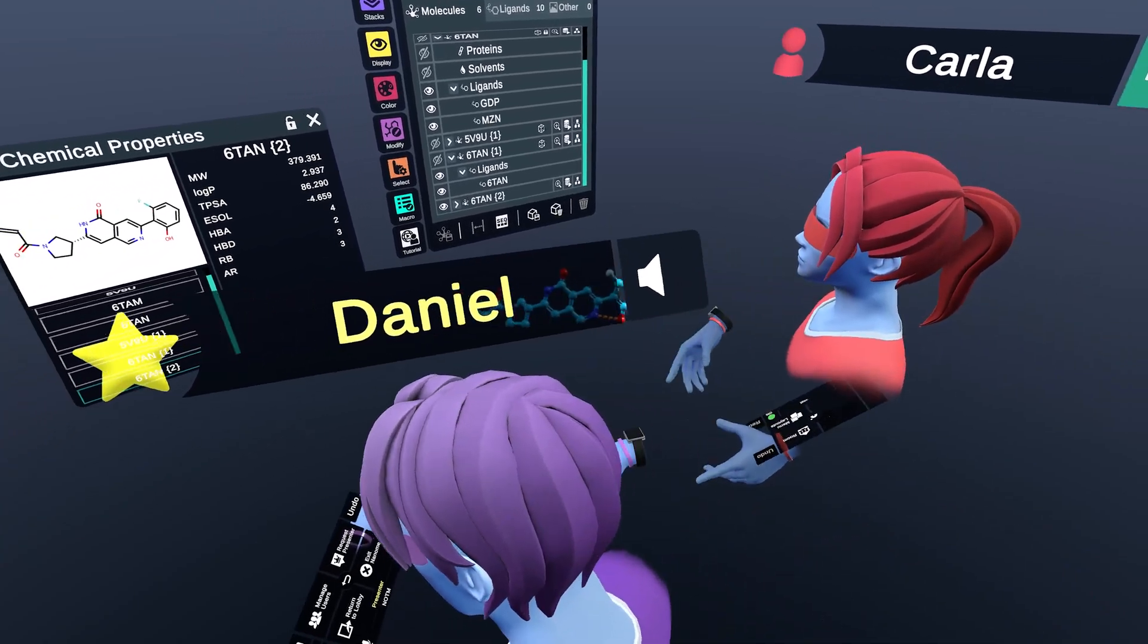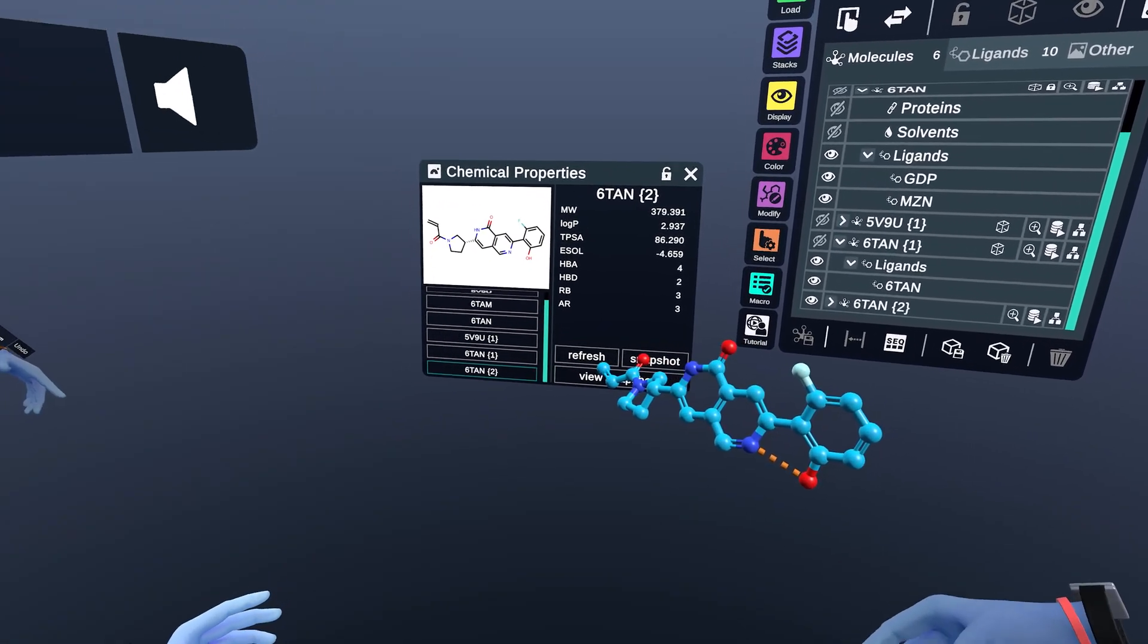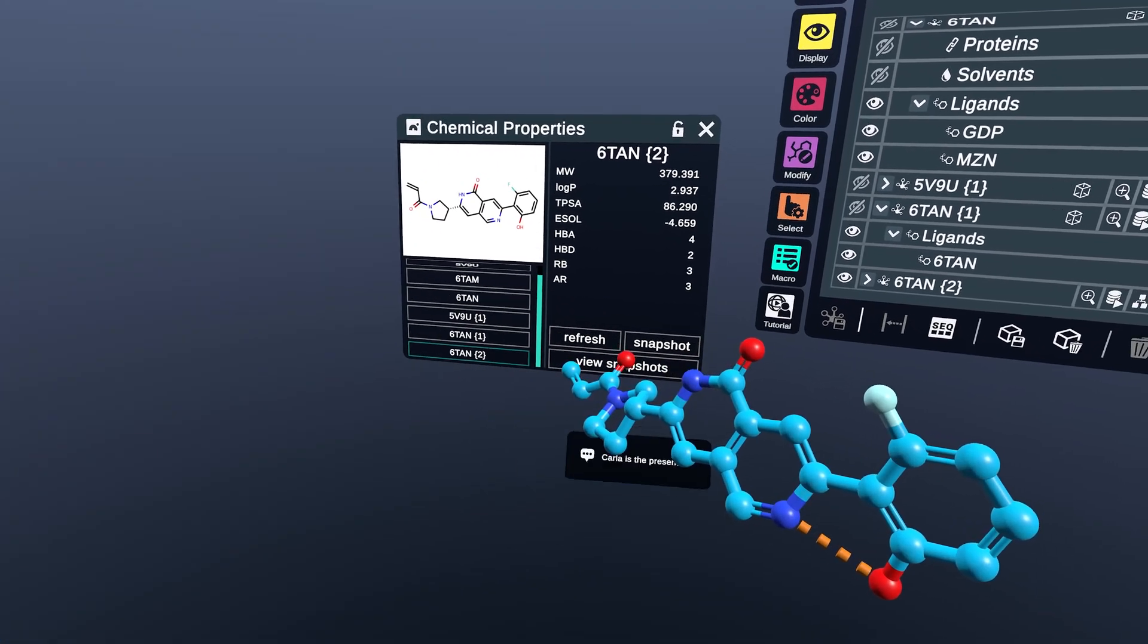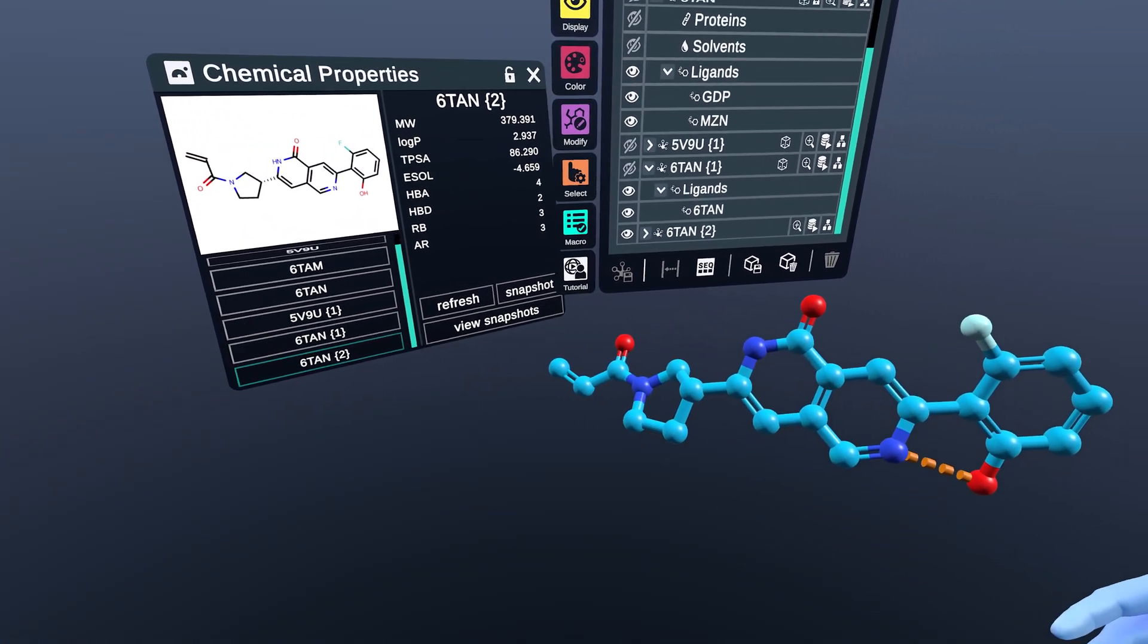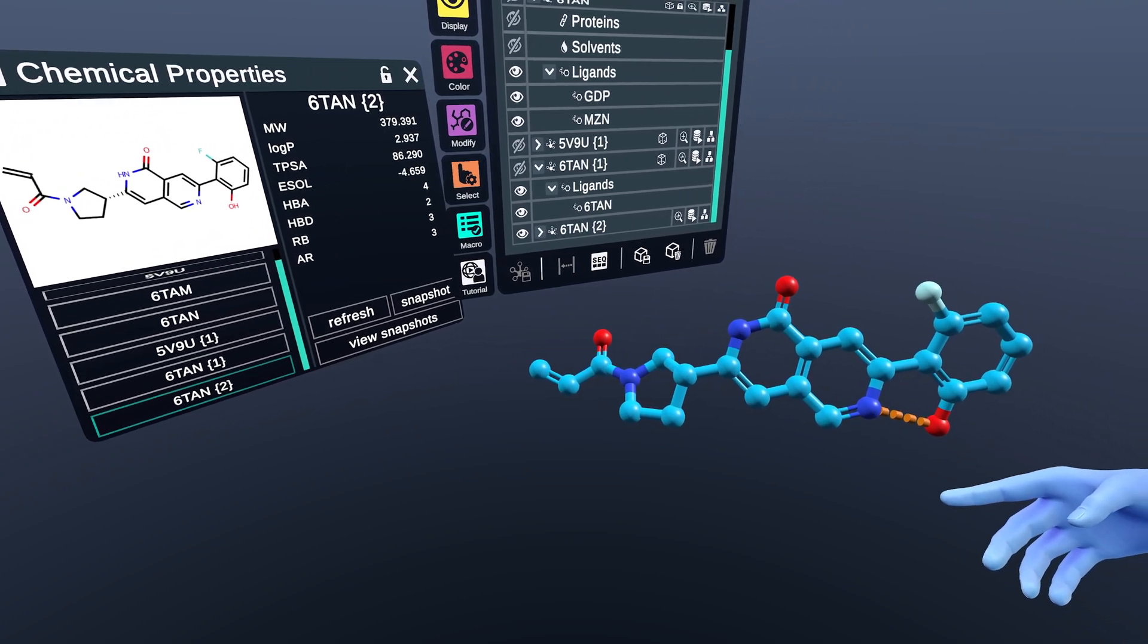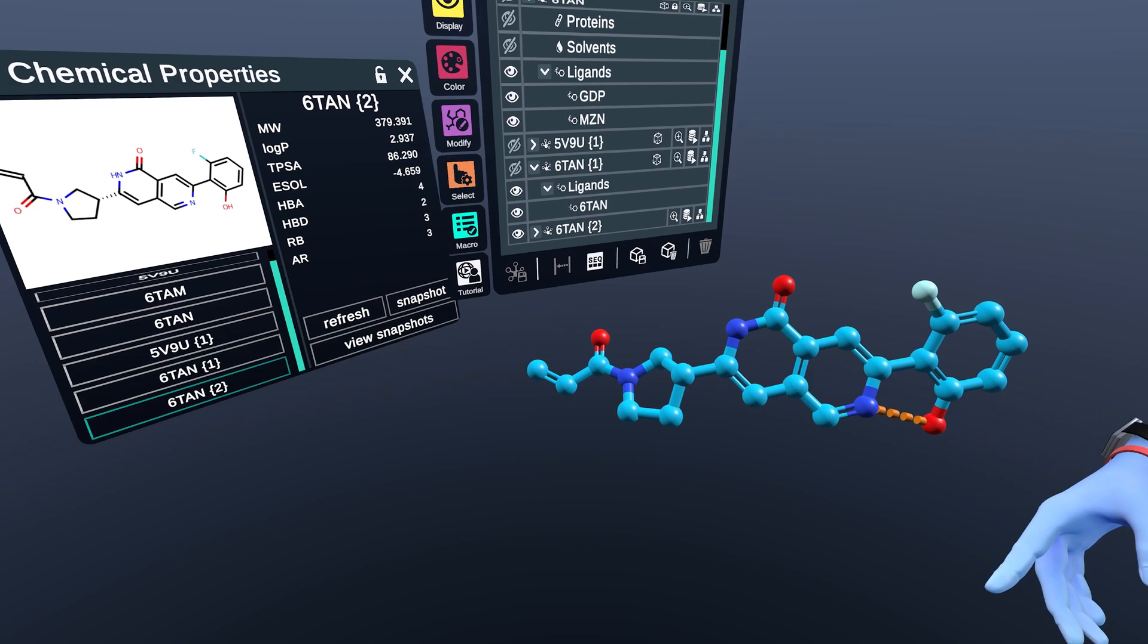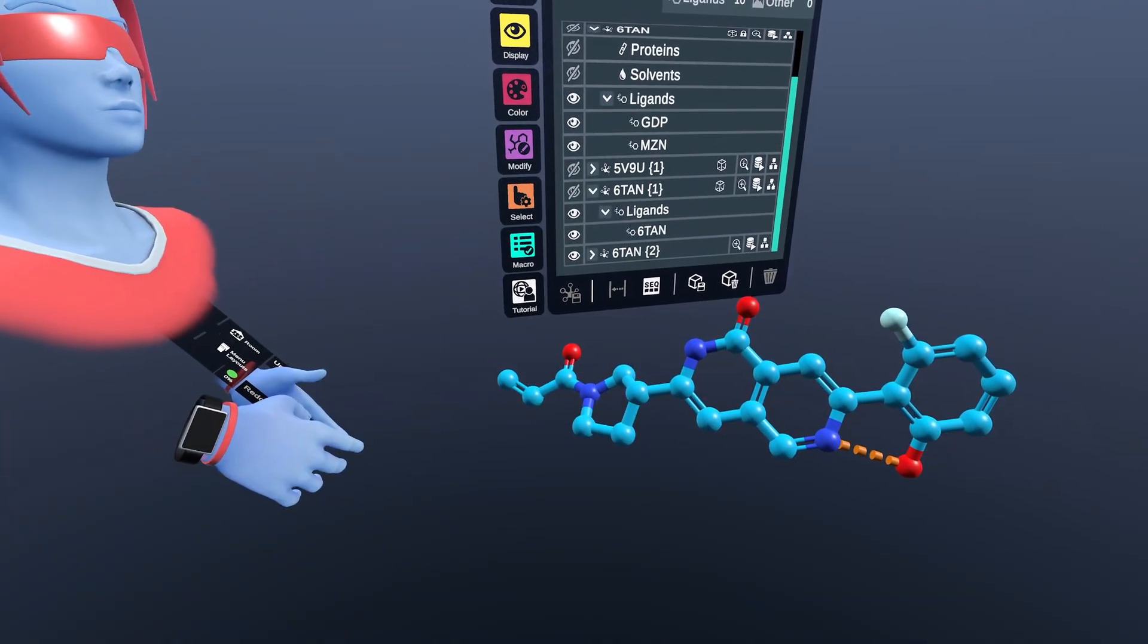So yeah, after looking at the hydrophobic surface, we decided to calculate the chemical properties of this ligand. And as you can see, the log P is around three, which is probably reasonable for this compound and reasonably hydrophobic. But the polar surface area is almost 90, which is actually fairly high. It's kind of interesting considering how hydrophobic that pocket is.